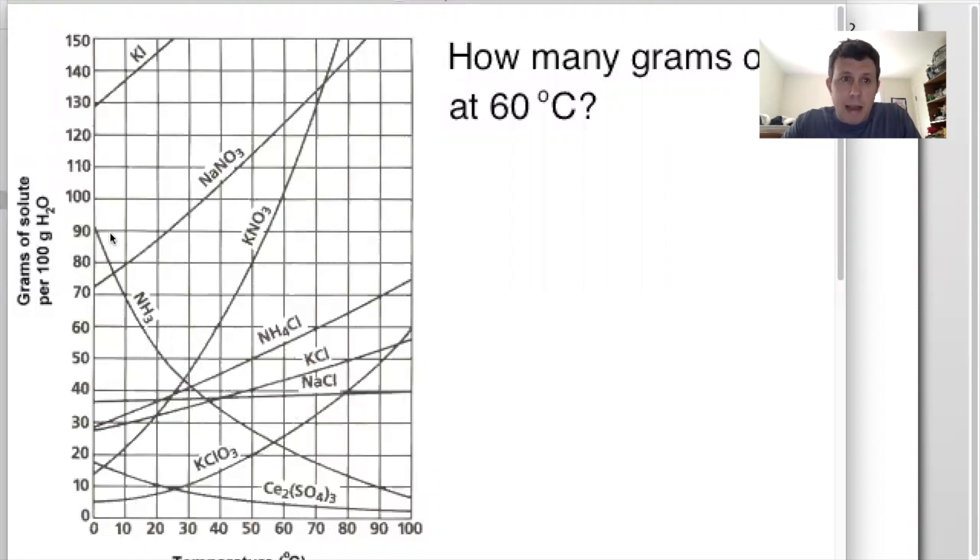The key thing about this graph is to realize that if I have enough water, I can dissolve pretty much any amount of salt. If I have the Pacific Ocean, I can dissolve 50 grams of even the most insoluble salt. So the graph always says per hundred grams of water. So they're assuming you have a beaker with a hundred grams of water. And at this temperature, how much could dissolve?